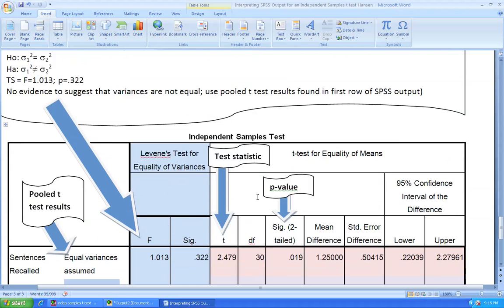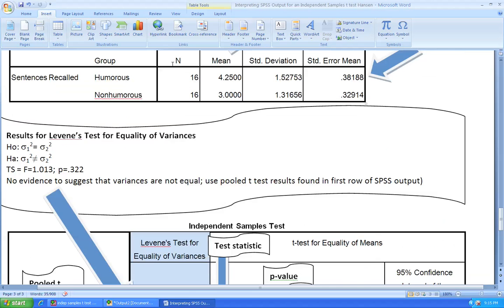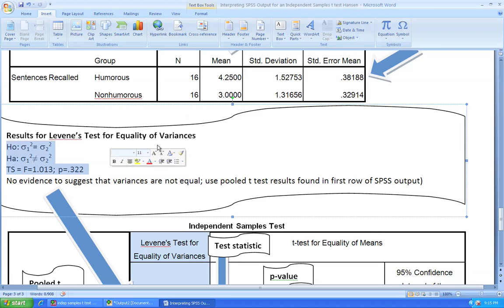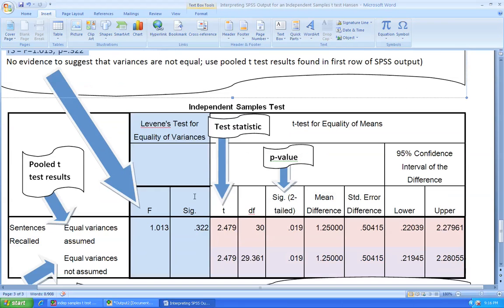In this particular example, because the sample sizes are equal, that's our first piece of evidence that we can use the pooled t-test results. Whenever the sample sizes are equal, the pooled t-test is the better test. Additionally, we have the results from Levene's test for the equality of variances, indicating to us that the variances are not different from each other. This test shows no evidence that the variances are different. Therefore, we can pool the variances using the pooled t-test.